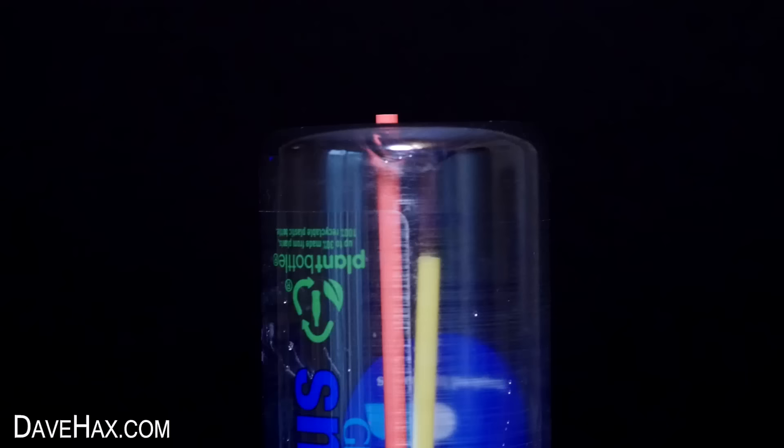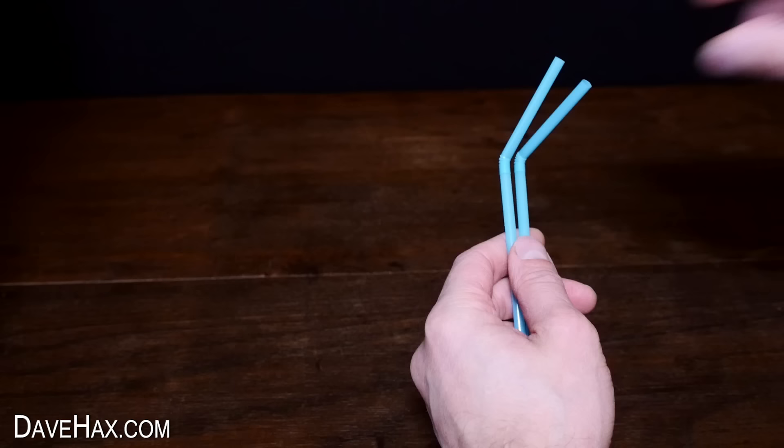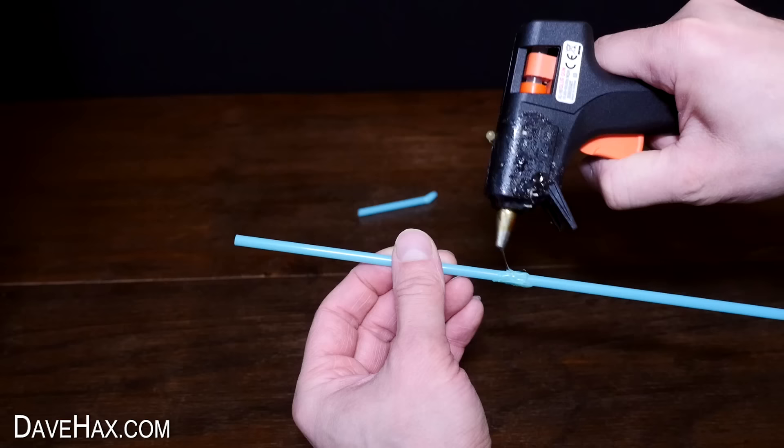Then thread the other bottle over the straws, screw it down onto the cap and the red straw should be just sticking through the hole at the top. Next, I took two blue straws, cut off the flexi and joined them together.